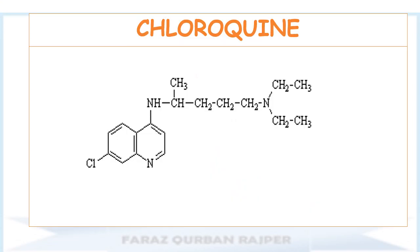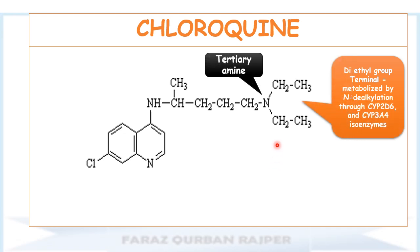This is the chemical structure for chloroquine, one of the 4-amino-quinoline anti-malarial drugs. You may observe that we have the terminal side chain with a tertiary amine group to which two ethyl groups are attached. These diethyl groups are essential for the optimum activity of chloroquine. Due to the presence of these two ethyl alkyl groups, the metabolism of the drug by the phase 1 reaction will occur by N-dealkylation via the enzymes CYP3A4 and CYP2D6.